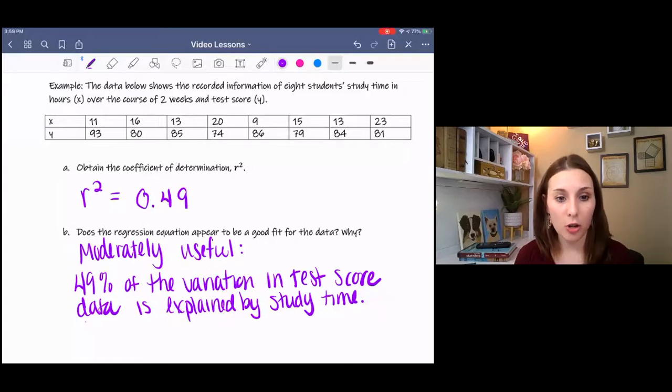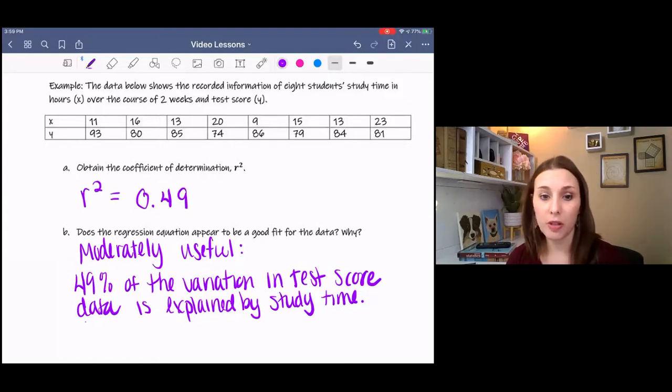All right. So you should find that r squared equals 0.49. This means that it is moderately useful, and it also means that 49% of the variation in test score data is explained by study time.